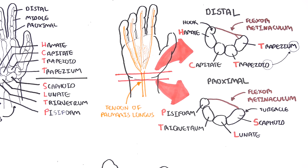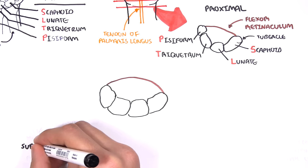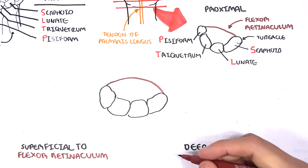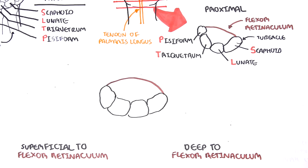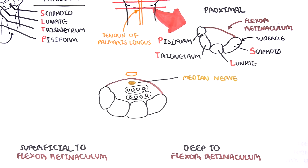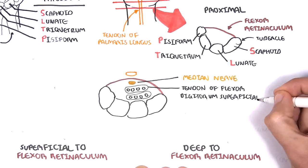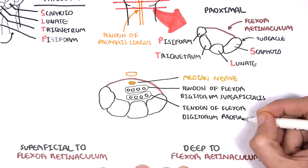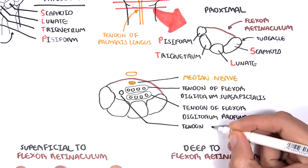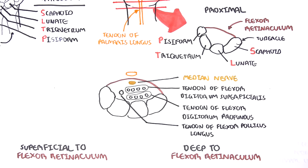Here I'm drawing the carpal bones of the right hand. Let's now look at things that run superficial to the flexor retinaculum and things that run deep to it. Beginning with the deep structures, it's easy to divide them into four things: one, the median nerve; two, the tendons of flexor digitorum superficialis; three, the tendons of flexor digitorum profundus; and four, the tendon of flexor pollicis longus, which goes to the thumb. The flexor digitorum superficialis and flexor digitorum profundus each have four tendons.